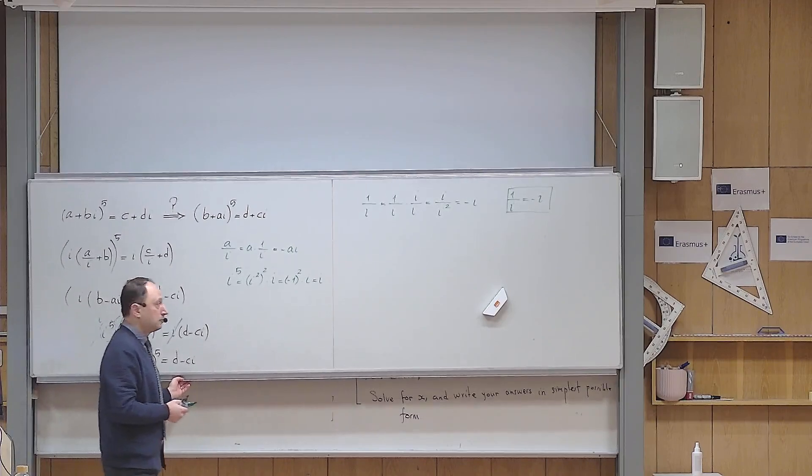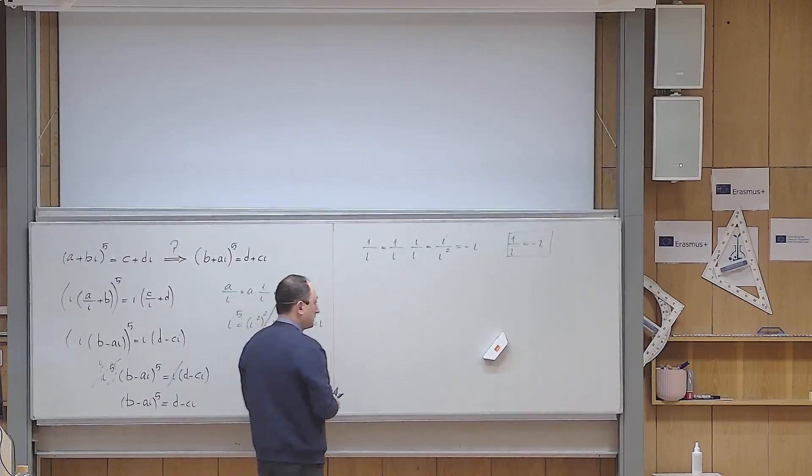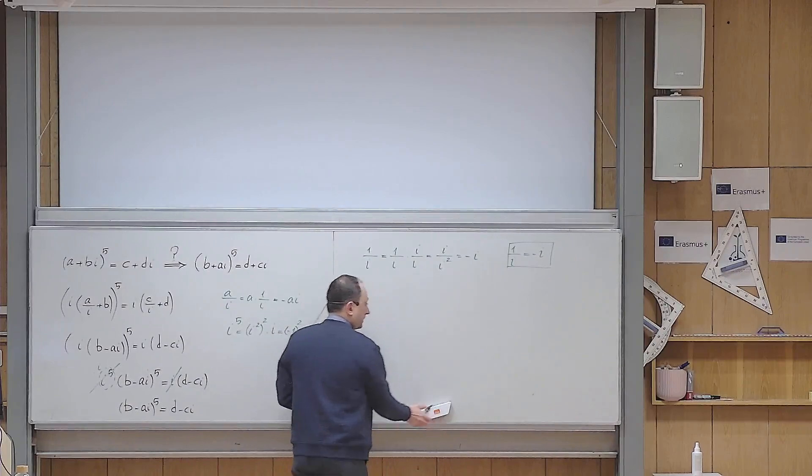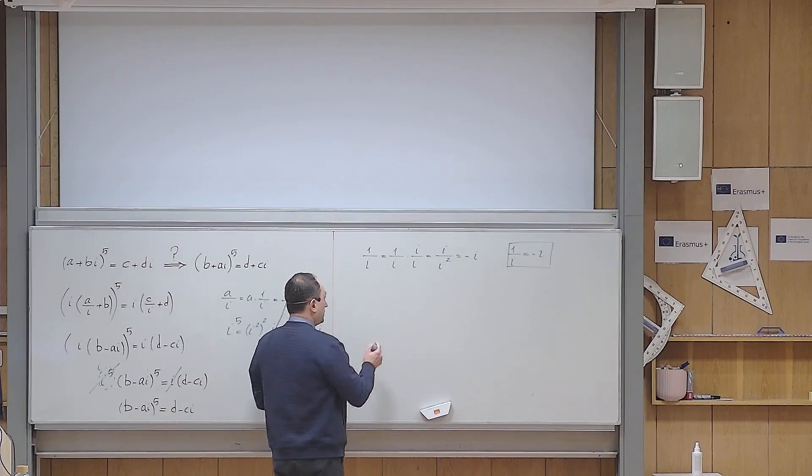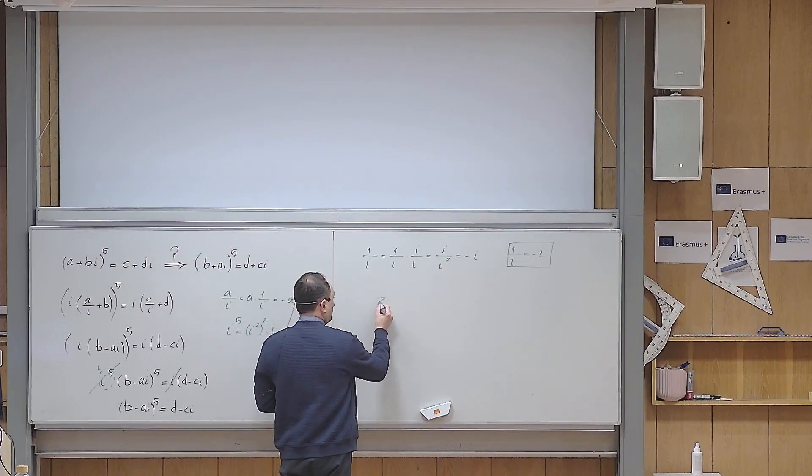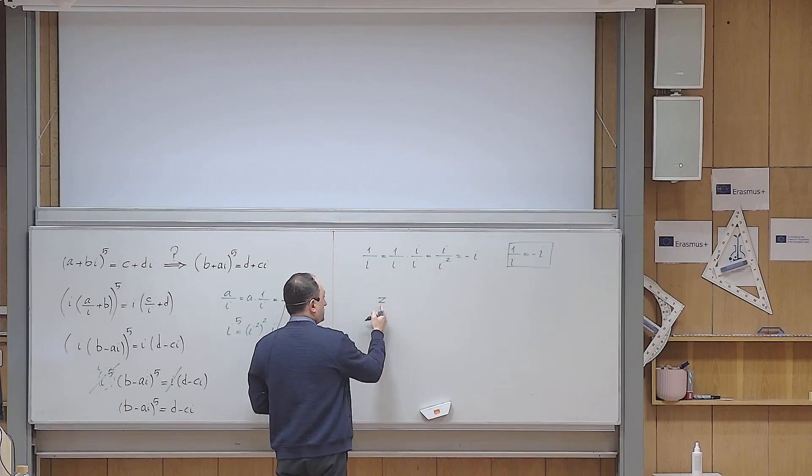So I want to exploit another property of the complex numbers for conjugation. So we know that if I have a complex number, if I raise this complex number to a natural power, say n, and then it becomes a new complex number,